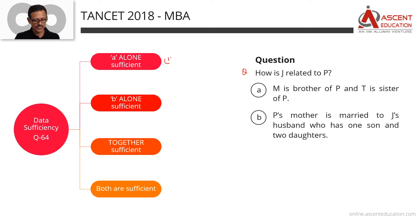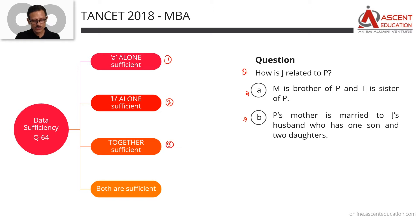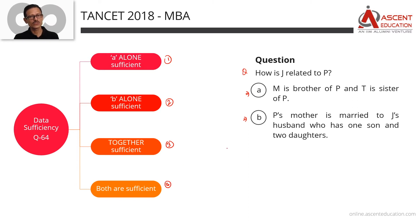Answer option 1: Statement A alone is sufficient, and B is not. Answer option 2: Statement B alone is sufficient, and A is not. Answer option 3: Together they are sufficient — A alone is not sufficient, B alone is not sufficient, but combining both statements gives the answer. Answer option 4: Both are independently sufficient — A alone is sufficient, and so is B alone.